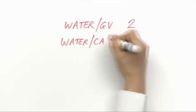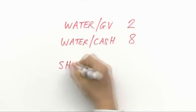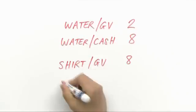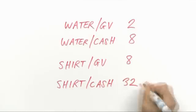So we would decide that €2 of gift voucher went on the water, €8 of cash went on the water, €8 of gift voucher went on the shirt and the remaining €32 of cash was spent on the shirt.